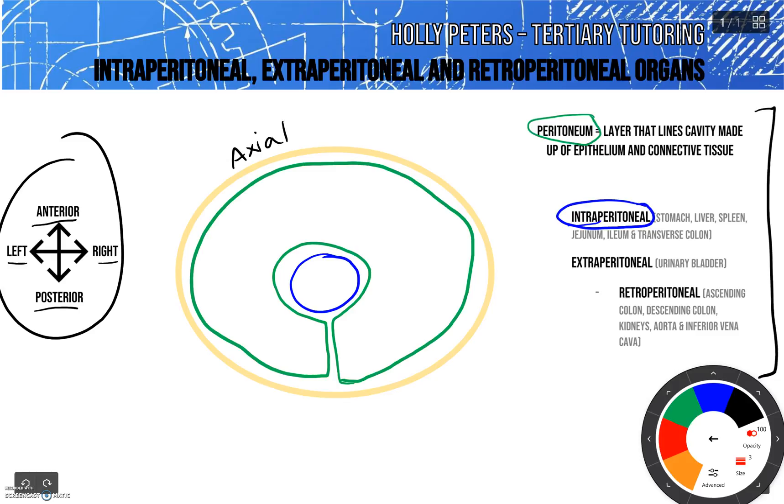The other type of organs that we have are extraperitoneal organs. A true example of this one is the urinary bladder. It's on the outside of the peritoneum, but we find it in the pelvic cavity and it's more inferior.